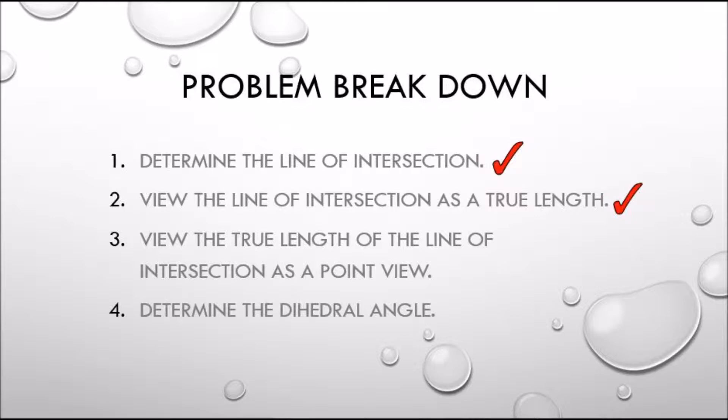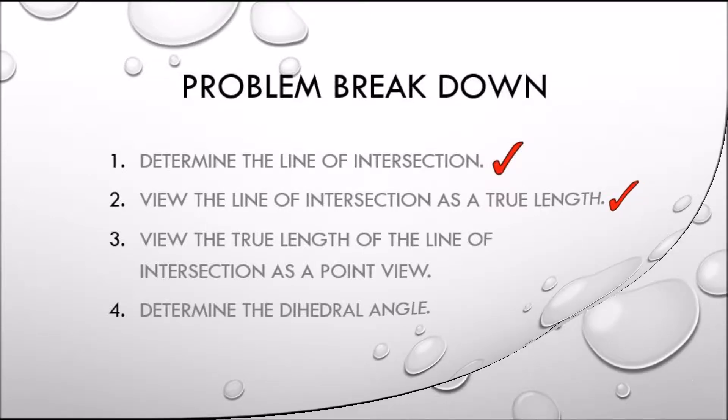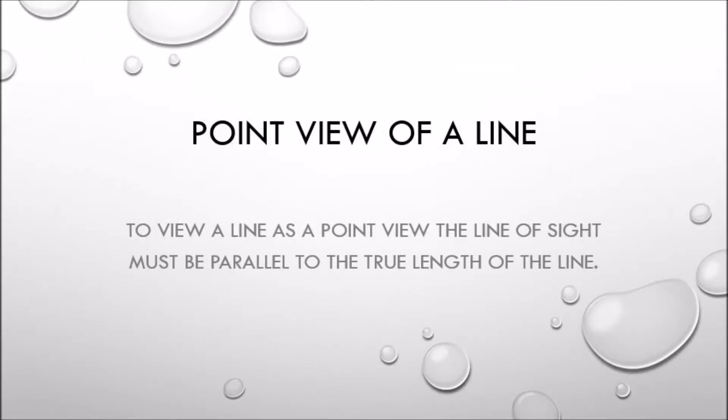We have found the line of intersection and the true length of the line of intersection. We now need to find the point view of that line and the determined dihedral angle. To view a line as a point view, the line of sight must be parallel to the true length.